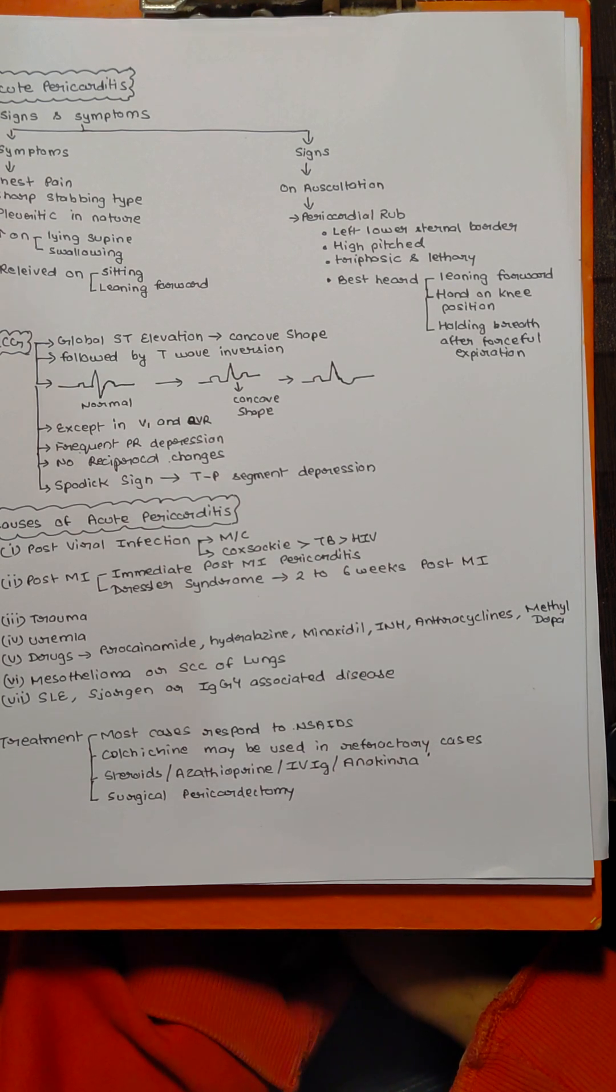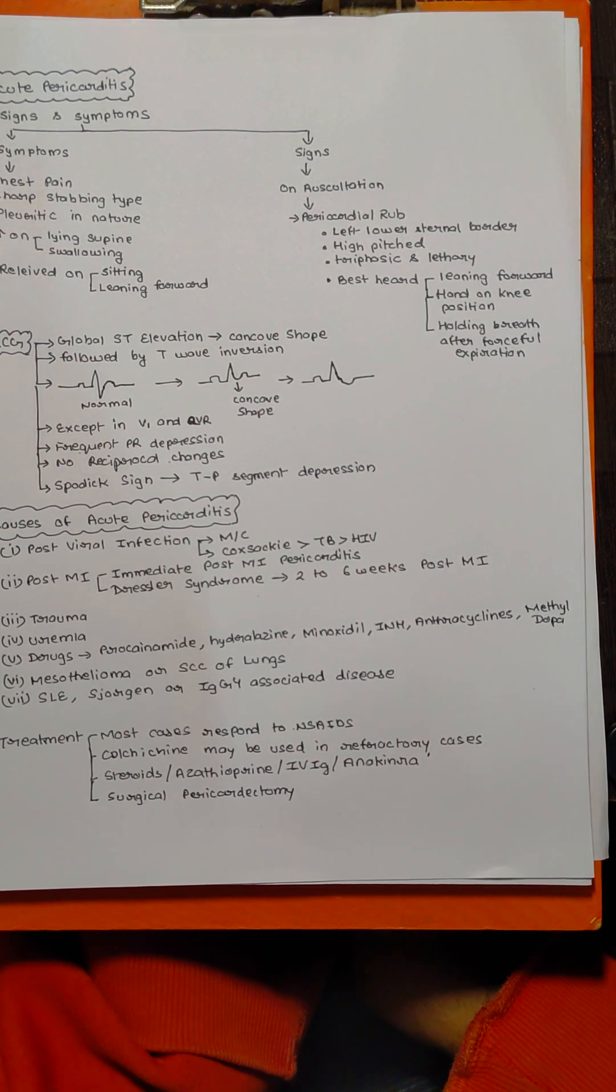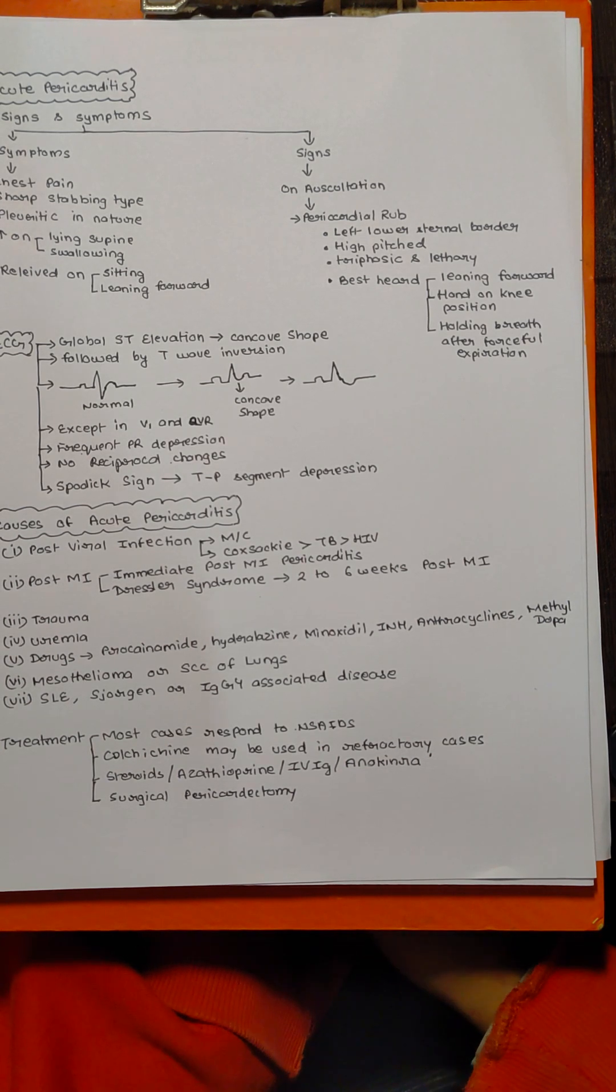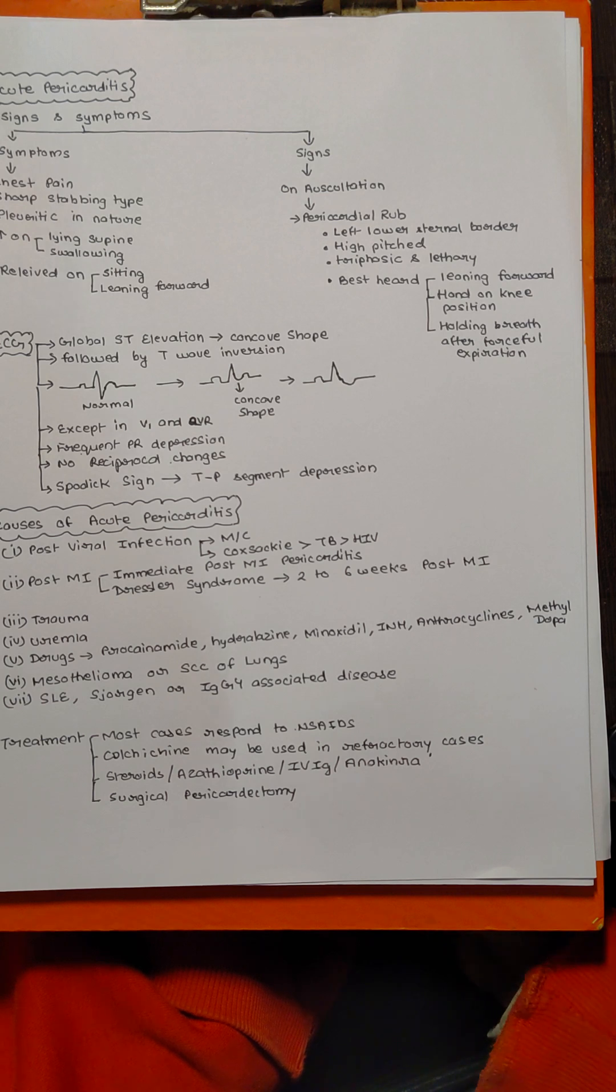I have written the six most common drugs that are known to cause acute pericarditis: procainamide, hydralazine, minoxidil, isoniazid, methyldopa, and anthracyclines. Anthracyclines basically include doxorubicin and daunorubicin, which are used in AML, ALL, and Hodgkin's lymphoma.